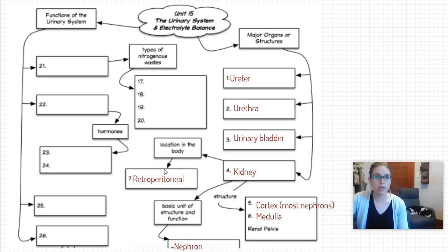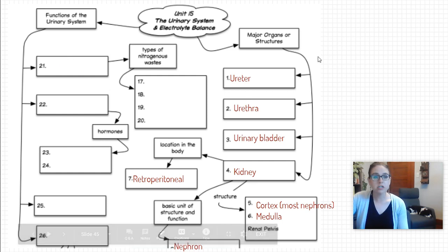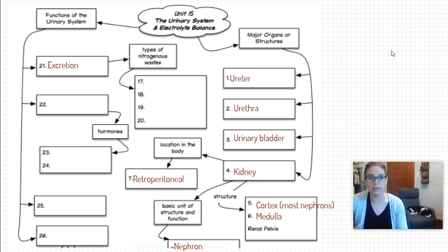Jumping over to our functions of the urinary system, it excretes waste, in particular nitrogenous waste which are waste that contain nitrogen that are toxic to our body. Those things that you would expect to find in normal healthy urine would be ammonia, urea, uric acid and creatinine. Those are all byproducts of our natural body's metabolism. We need to get rid of them because they're toxic to our body. So our nephrons filter that out.